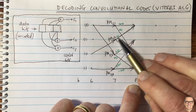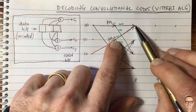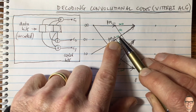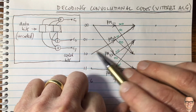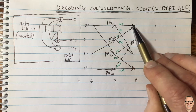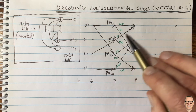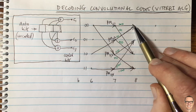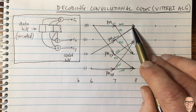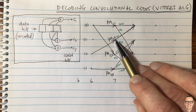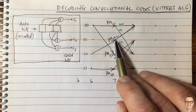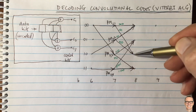It computes the branch metric for each incoming path — for instance, how much the three measurements match 000 — and adds that to the path metric that got there. Then it computes the same for the other branch — say how much they match 111 — and adds that to its path metric. Whichever of these two totals is lower, that path is chosen and the other is discarded.